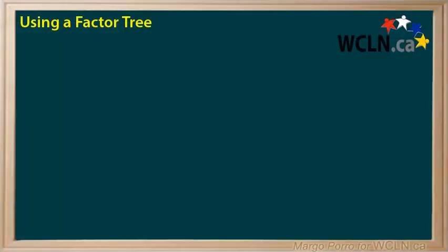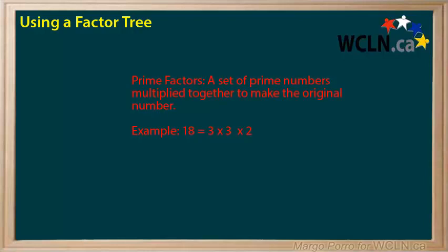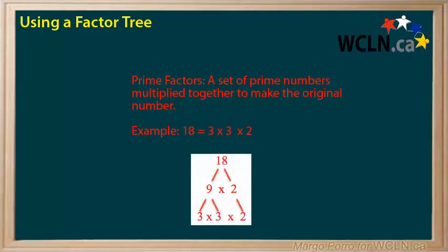Every number has its own set of prime factors. No two numbers have the same set of prime factors. What are prime factors? A set of prime numbers multiplied together to make the original number. For example, the prime factors of 18 are 3 times 3 times 2. They can be found at the bottom of a factor tree for 18.